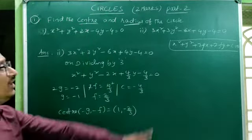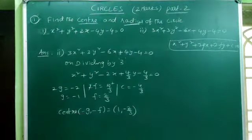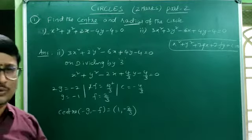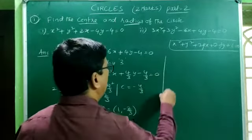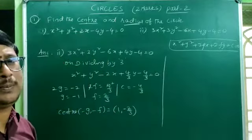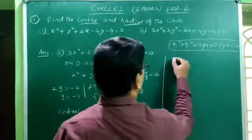Now we have to find the radius. The radius of the circle is found using the formula r = √(g² + f² − c).